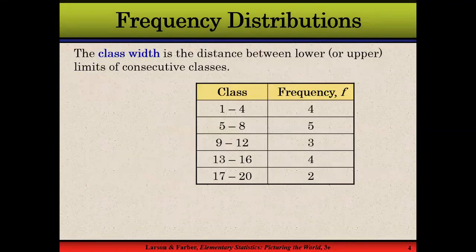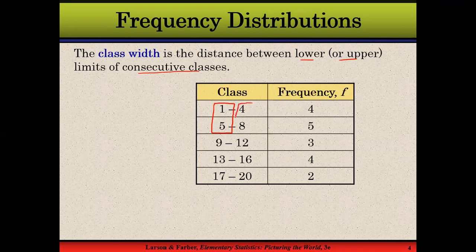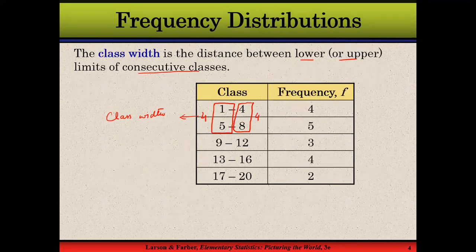Next we discuss class width. Class width is the distance between the lower or upper limits of consecutive classes. For example, looking at the lower limits: five minus one equals four, nine minus five equals four, thirteen minus nine equals four. The distance between all consecutive classes is the same, and this value is called the class width.